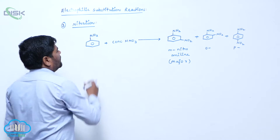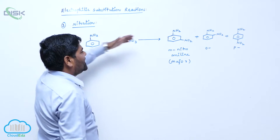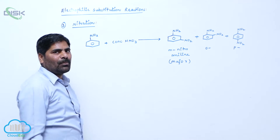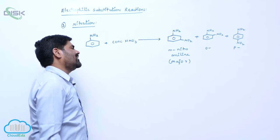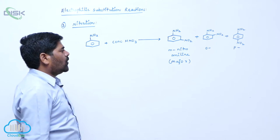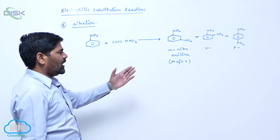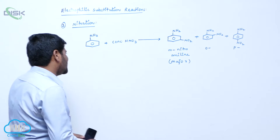Generally, aniline can act as ortho para directing group. But when it is reactive with concentrated nitric acid, it gives meta nitro product, meta nitro aniline as a major product compared to ortho para nitro.